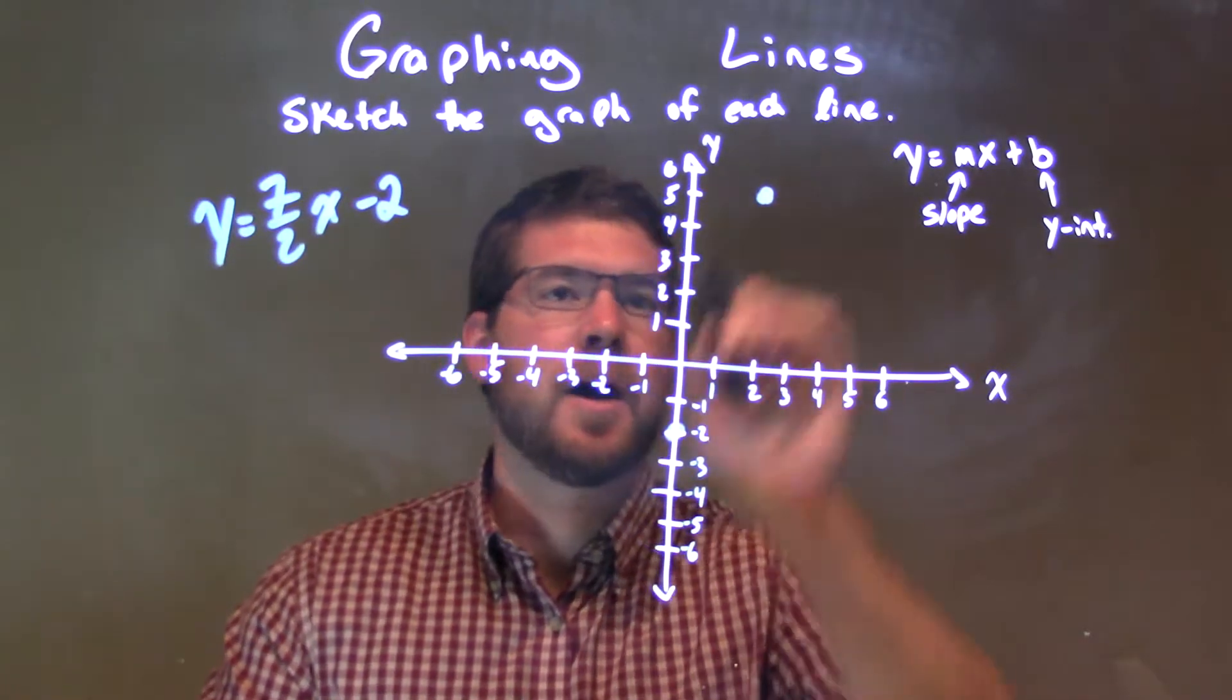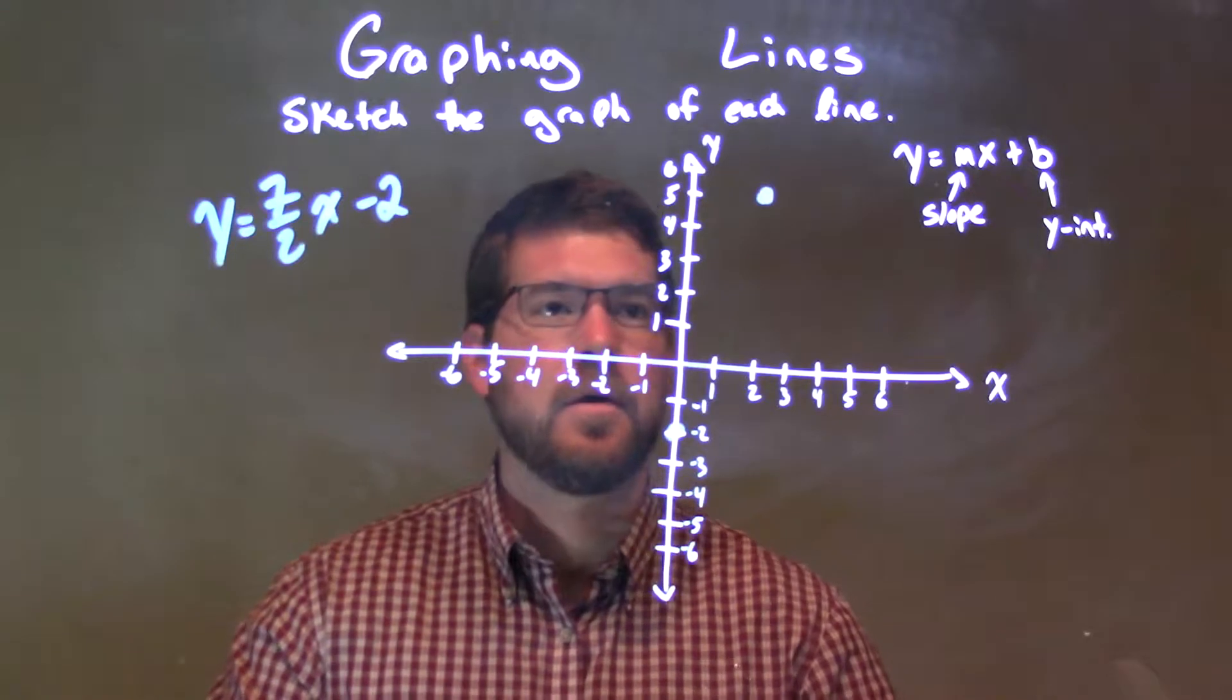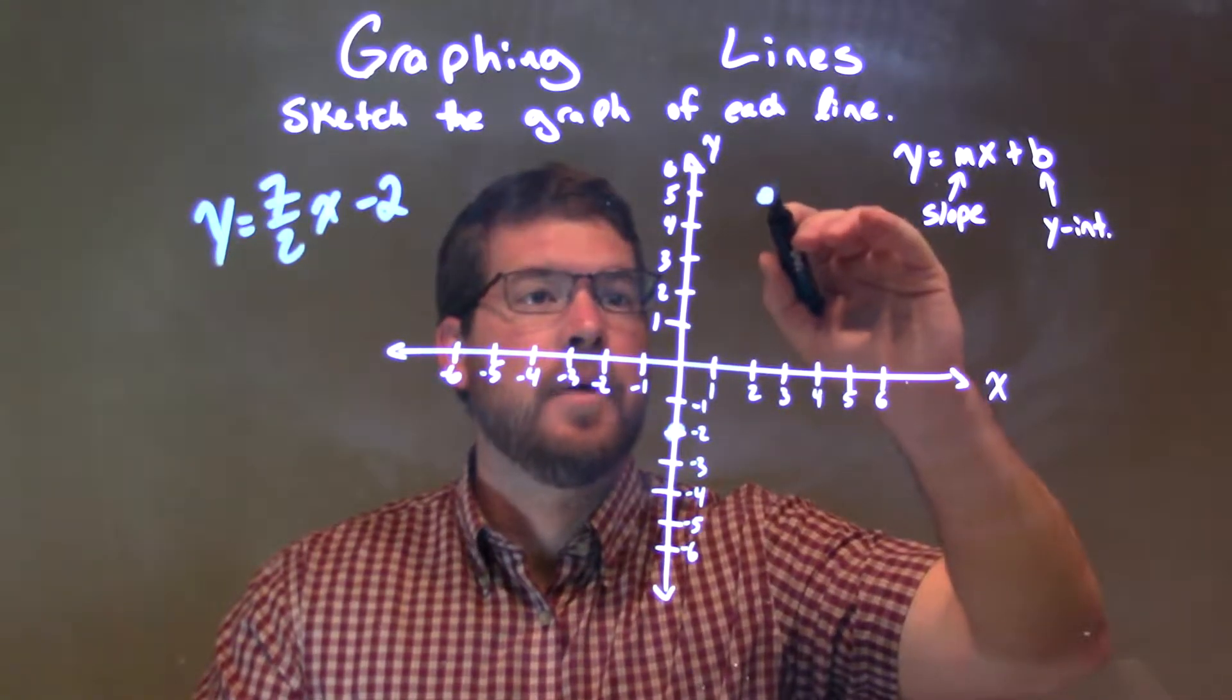There we have it, we have a 2 comma 5 right there. And now we have two points, we can make a line.